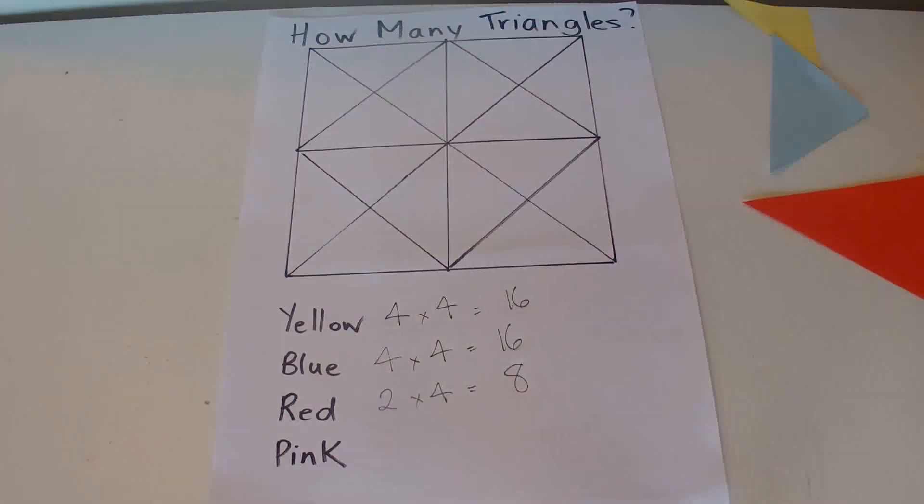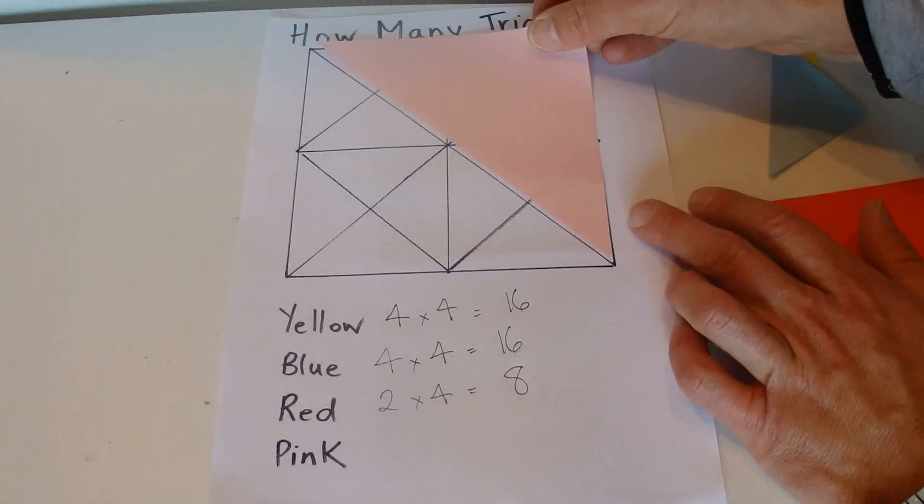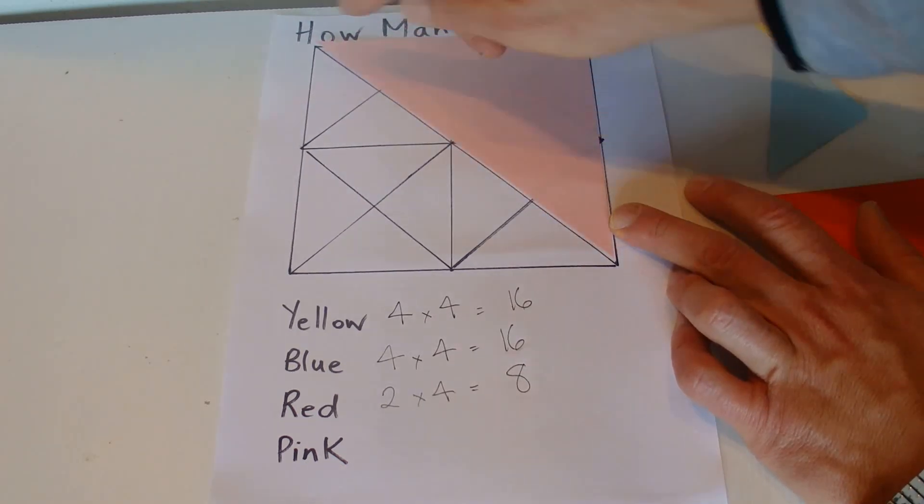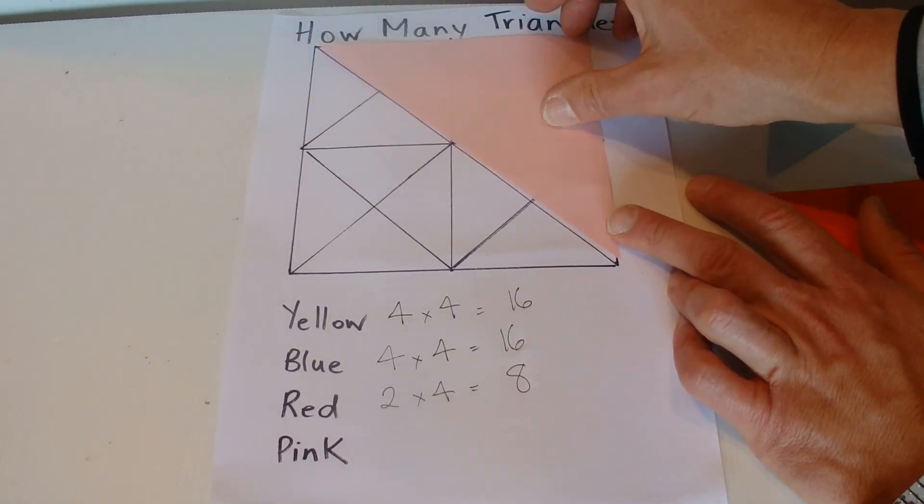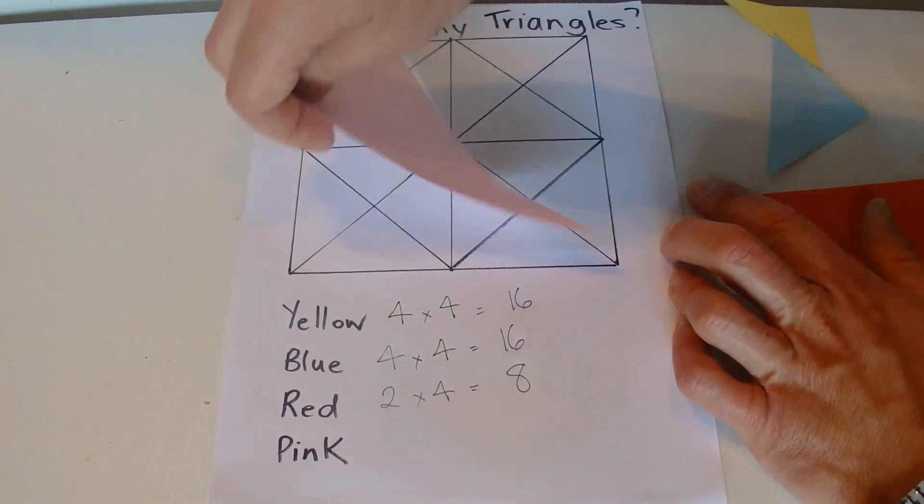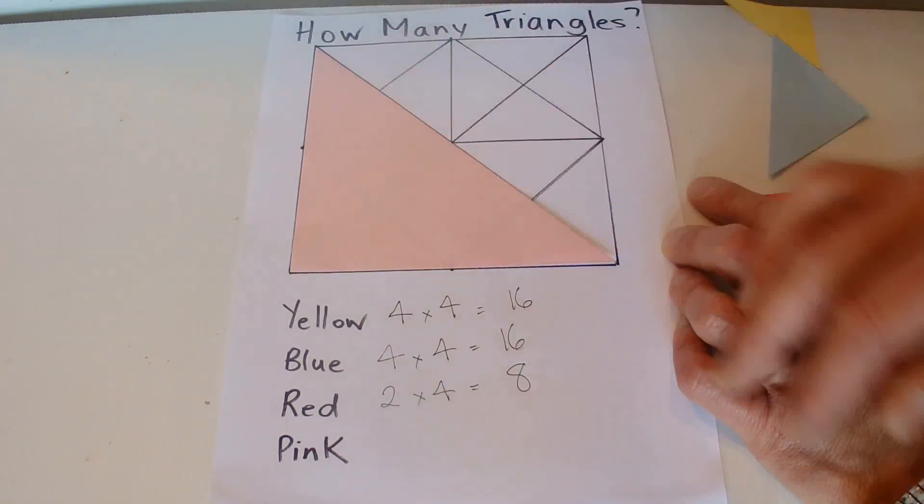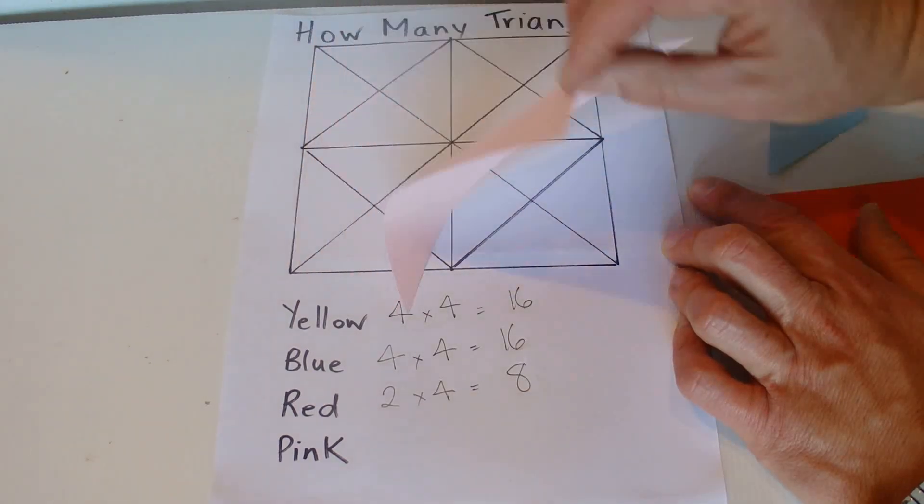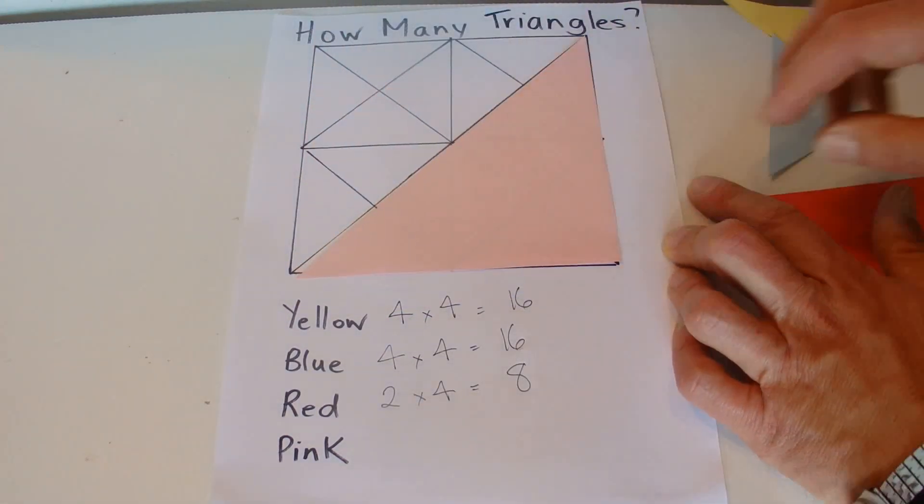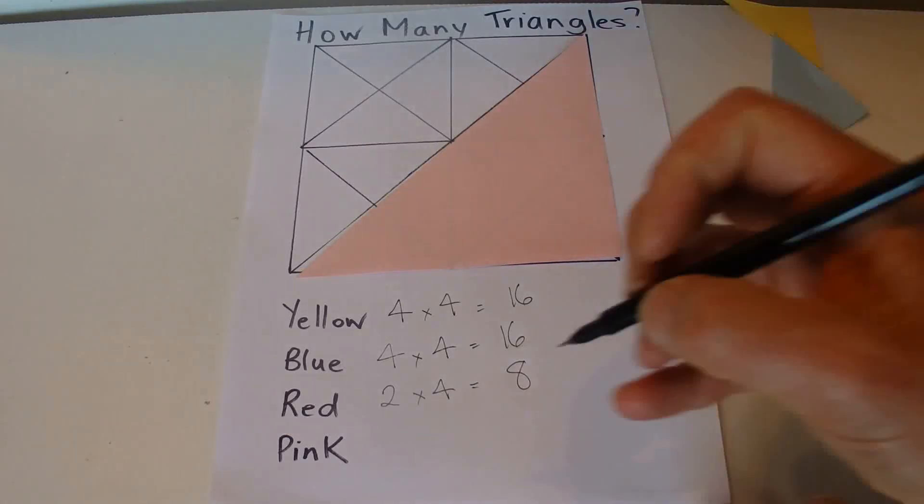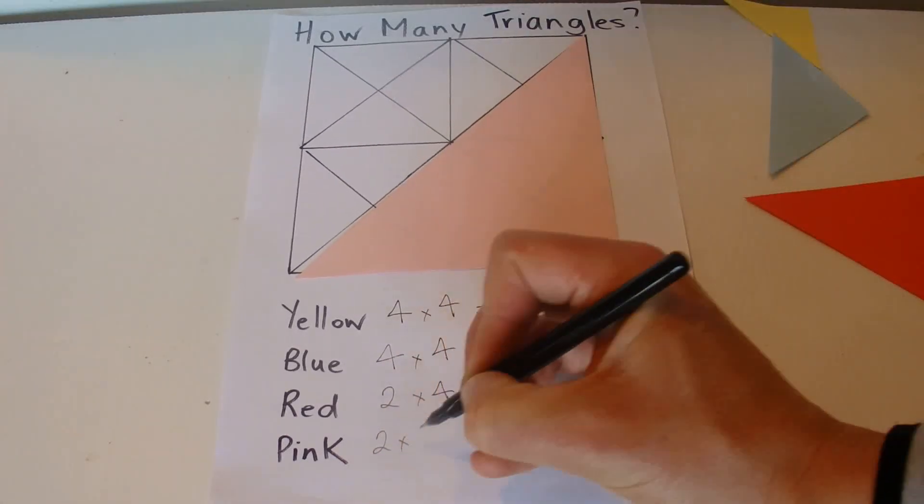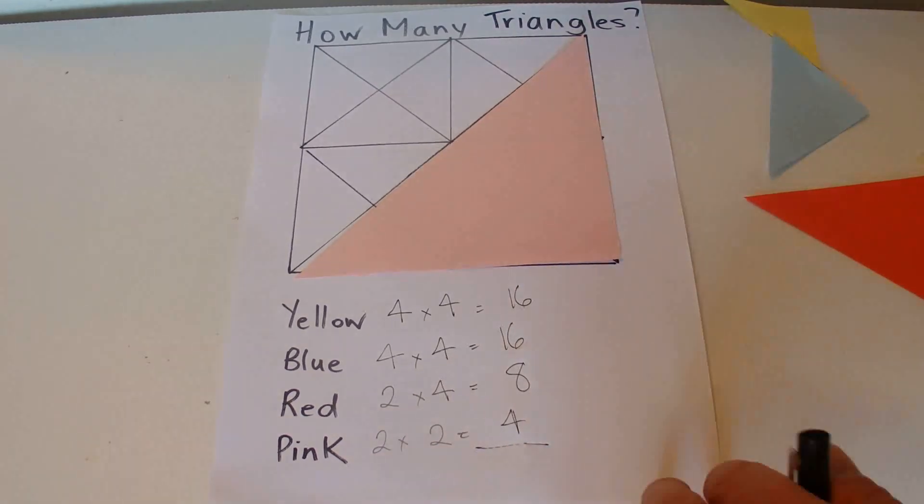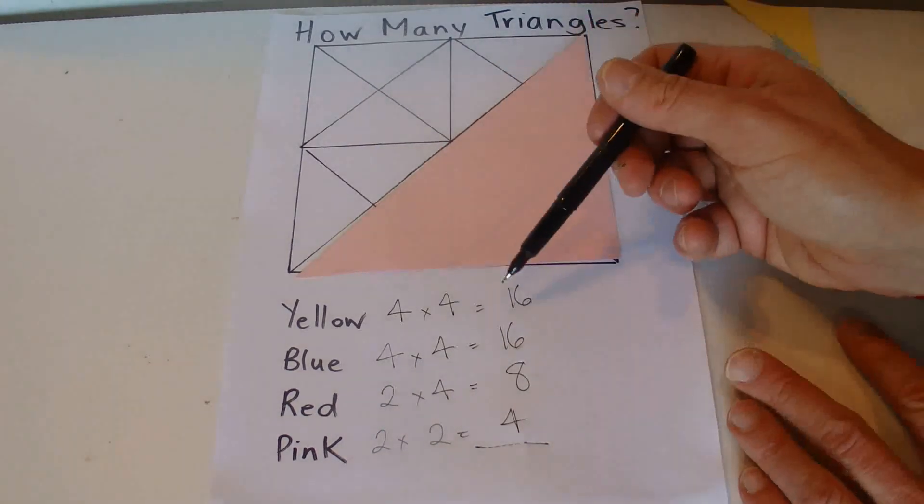And the last size triangle we've got there is the big pink one. You can see that you've got a triangle that cuts the grid in half, and you've got one there and you've got one there—it's two that way. But you've also got one, two that way as well. So you've got four of those big triangles, or two times two is four.